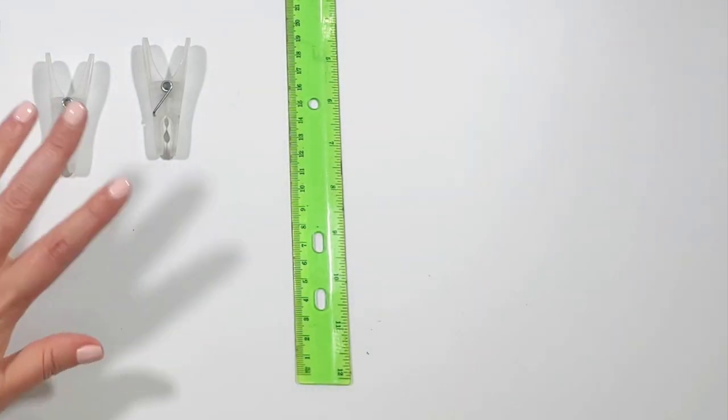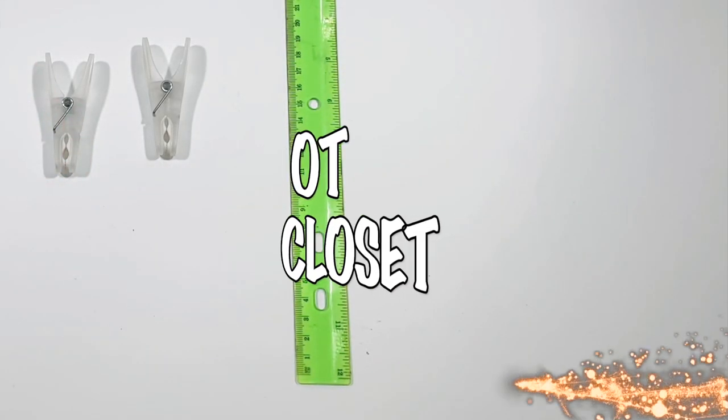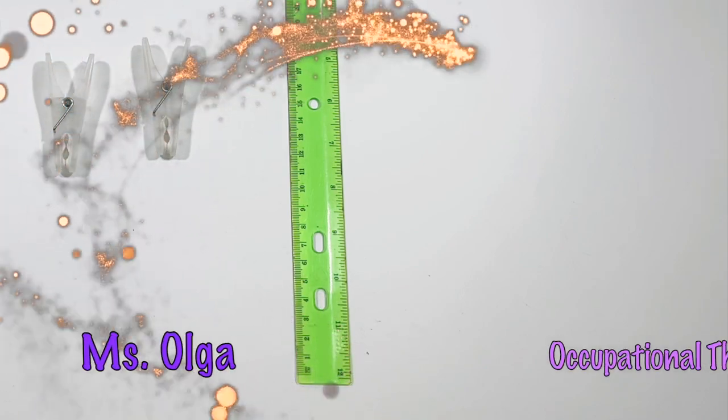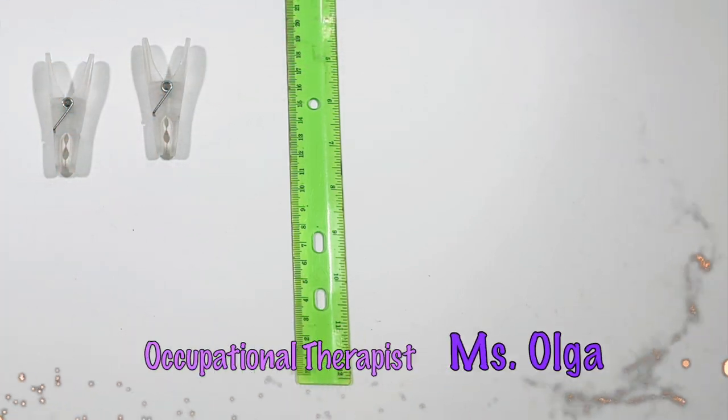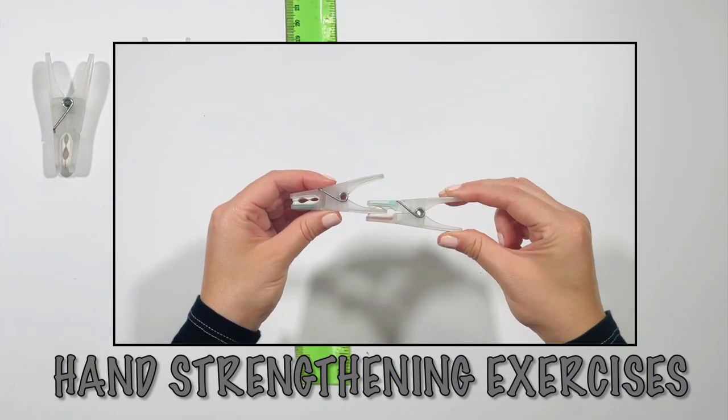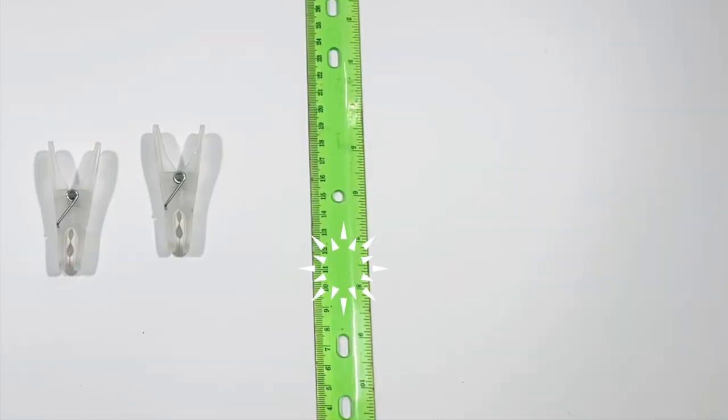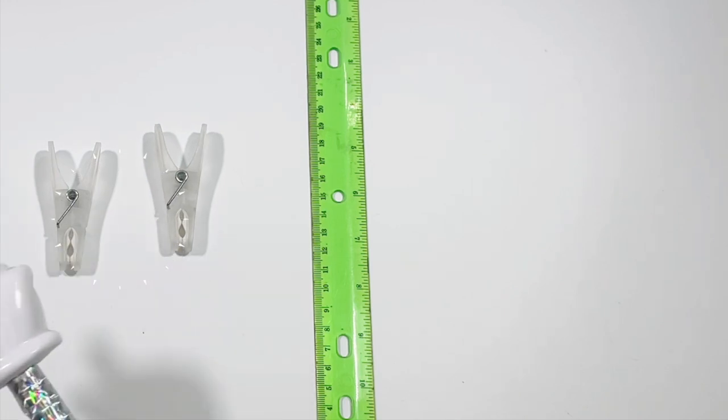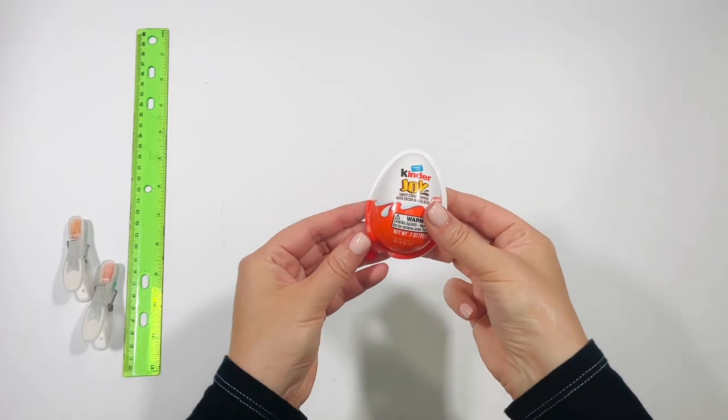Hello everyone, it's great to see you back in OT Closet. I'm Miss Olga, occupational therapist. Let's do seven exercises to make your hands stronger. You need a ruler and two cloth pins, and when we finish I have a surprise for you.